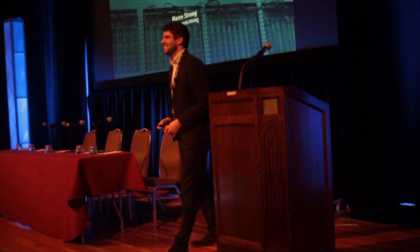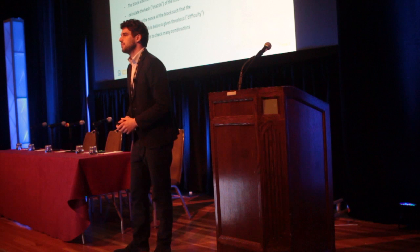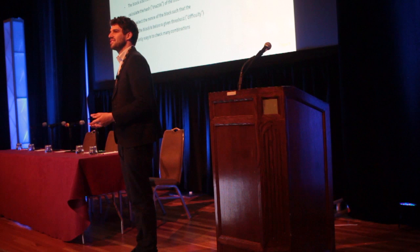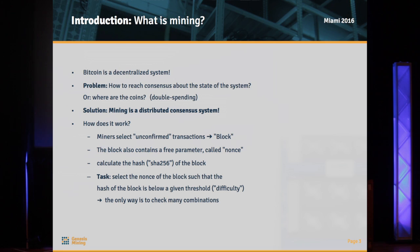Let's start. Of course, I know most of you are quite familiar already with the mining process — just a few words so that we're all on the same page. Bitcoin is a decentralized consensus system, and because of that there is no central entity that is validating the transactions. So there is a need for a decentralized system to validate them, and these are the miners. Miners are authorizing and validating Bitcoin transactions.